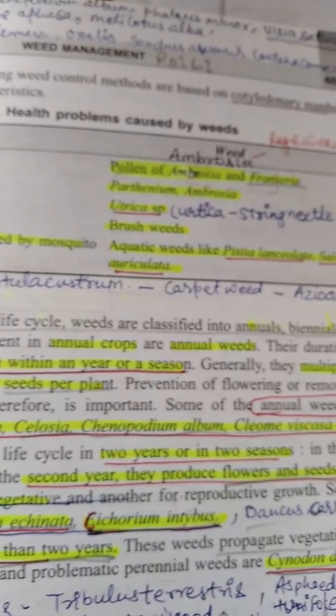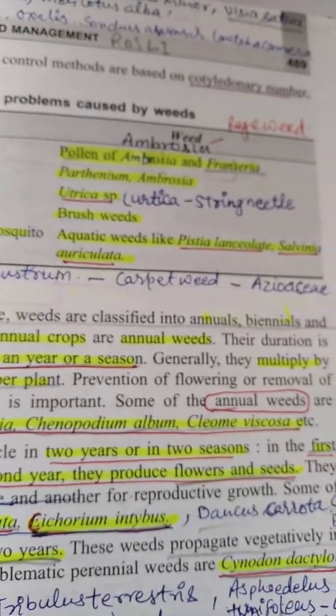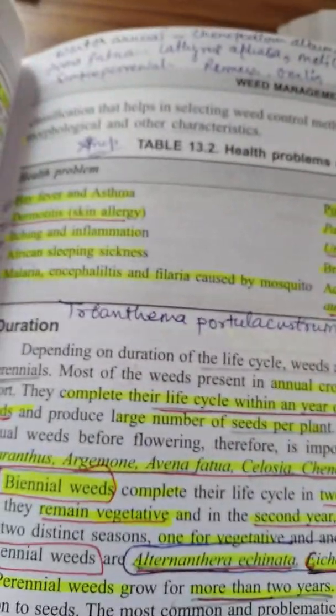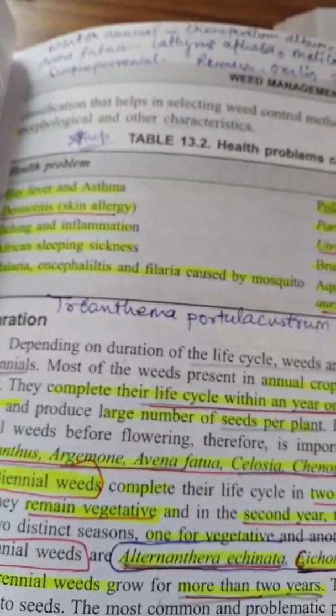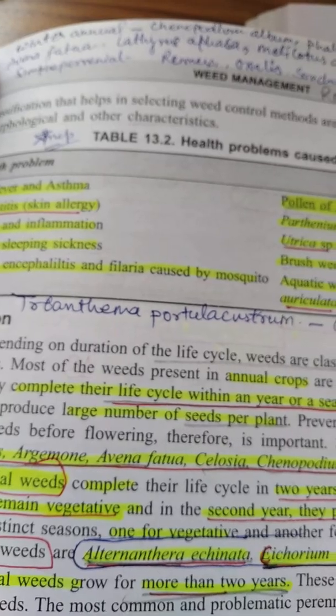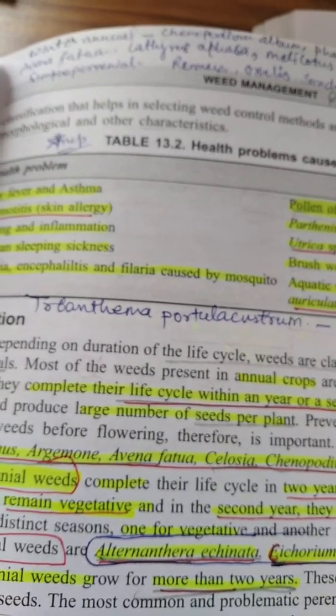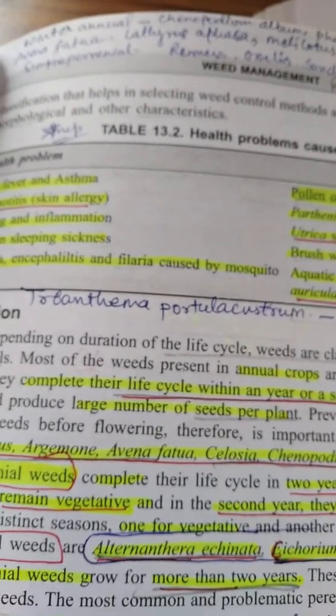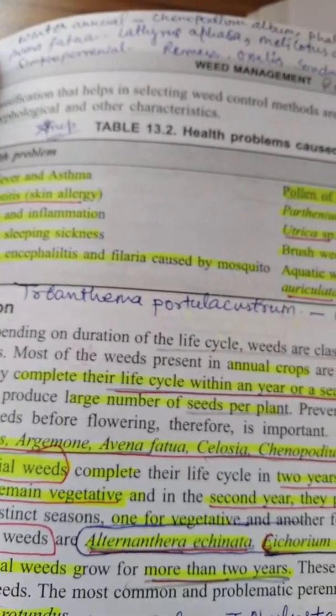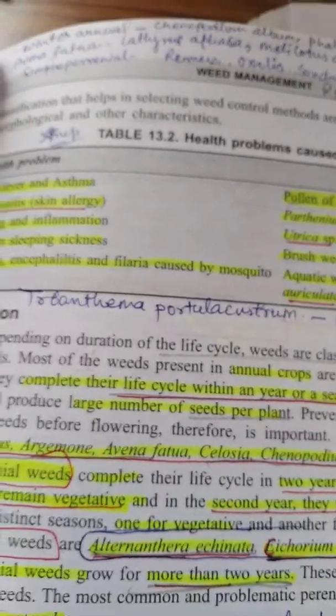Also remember: aquatic weeds like Pistia lanceolata and Salvinia auriculata cause malaria, encephalitis, and filaria — these are caused by mosquitoes breeding in them. This table of weed-caused diseases is very important. Please remember it.